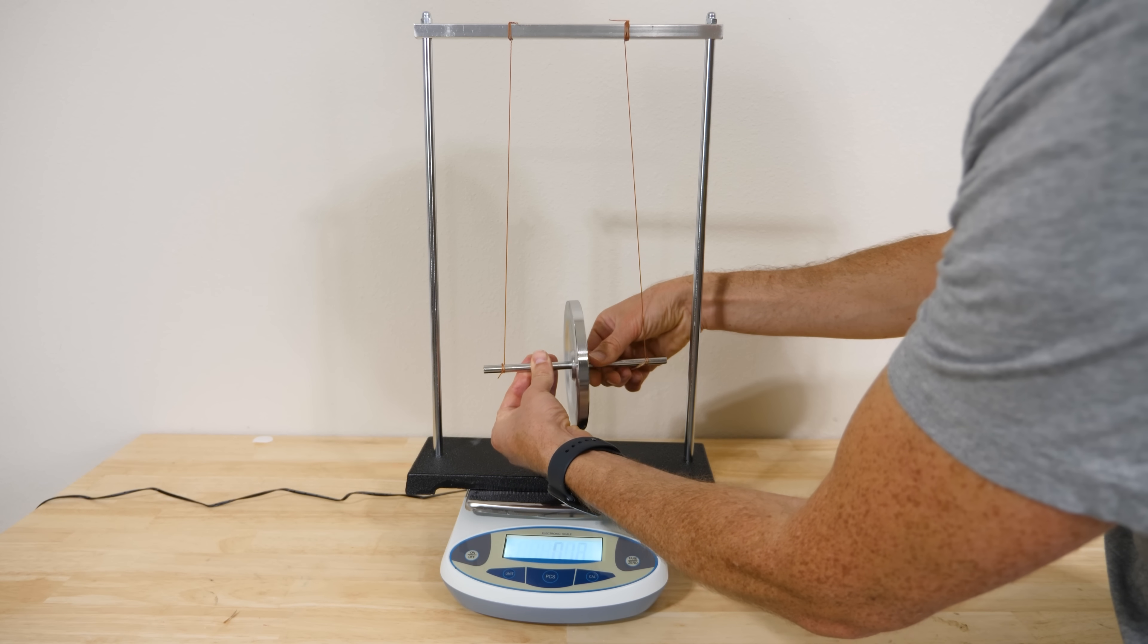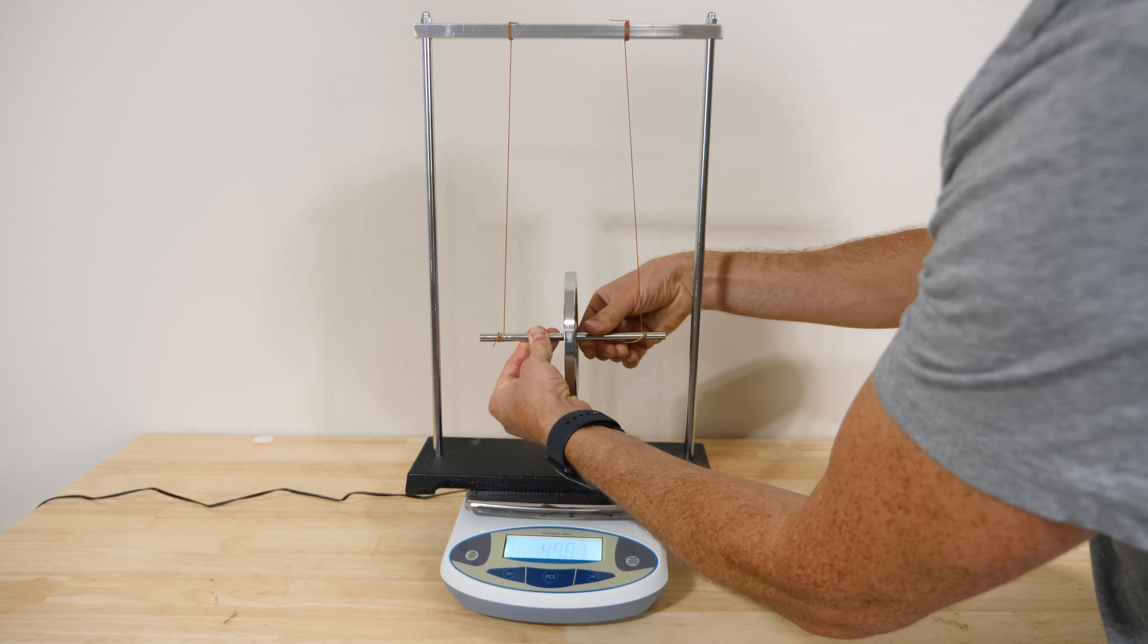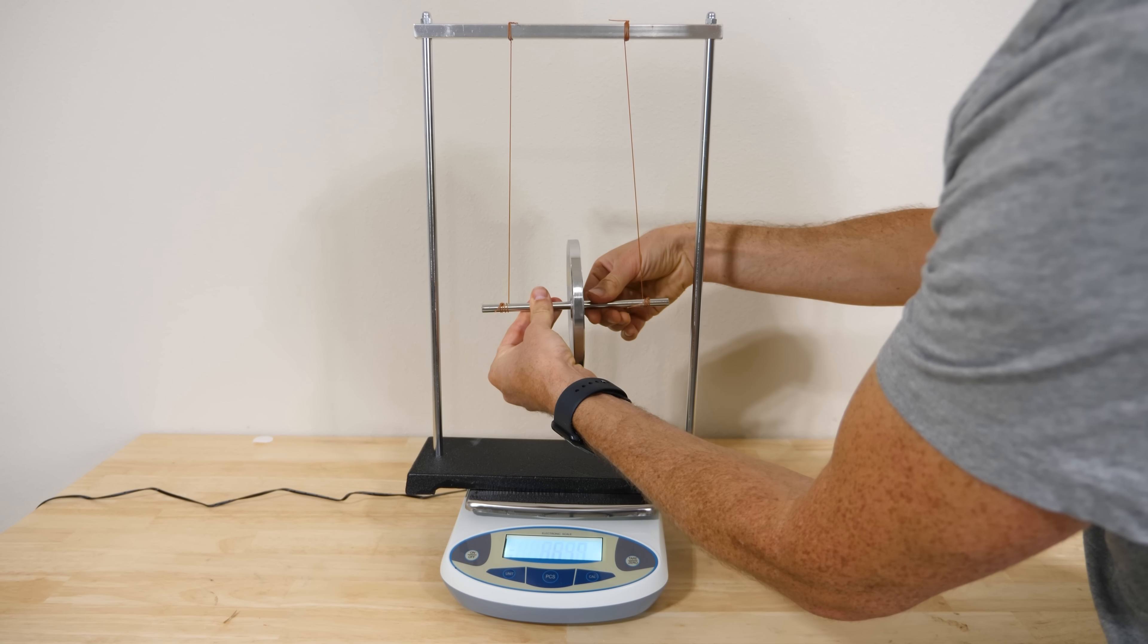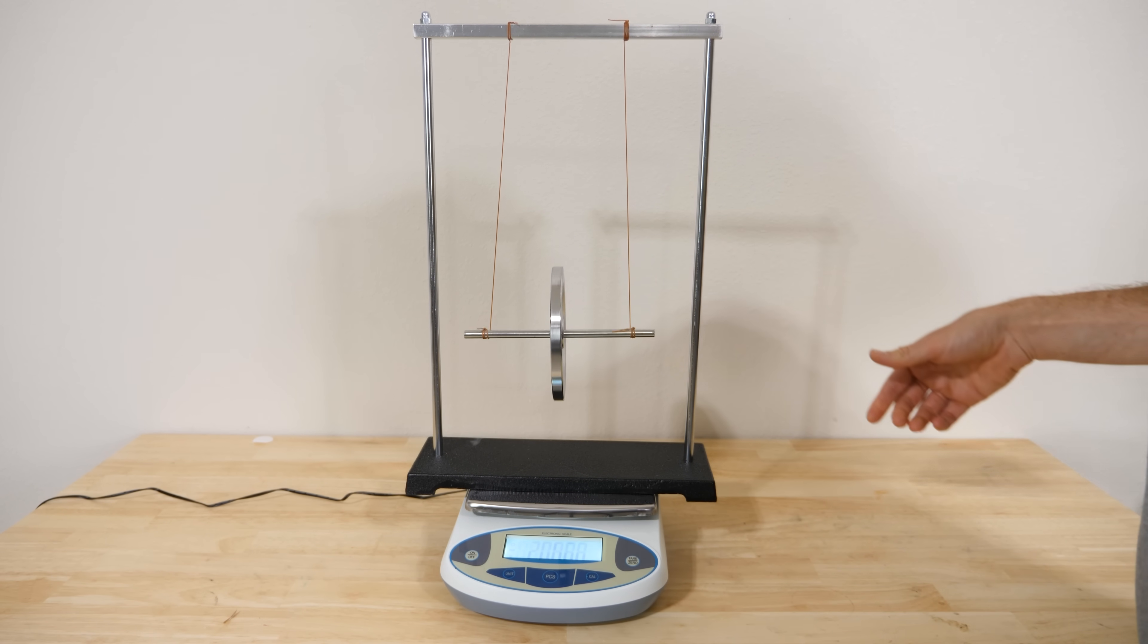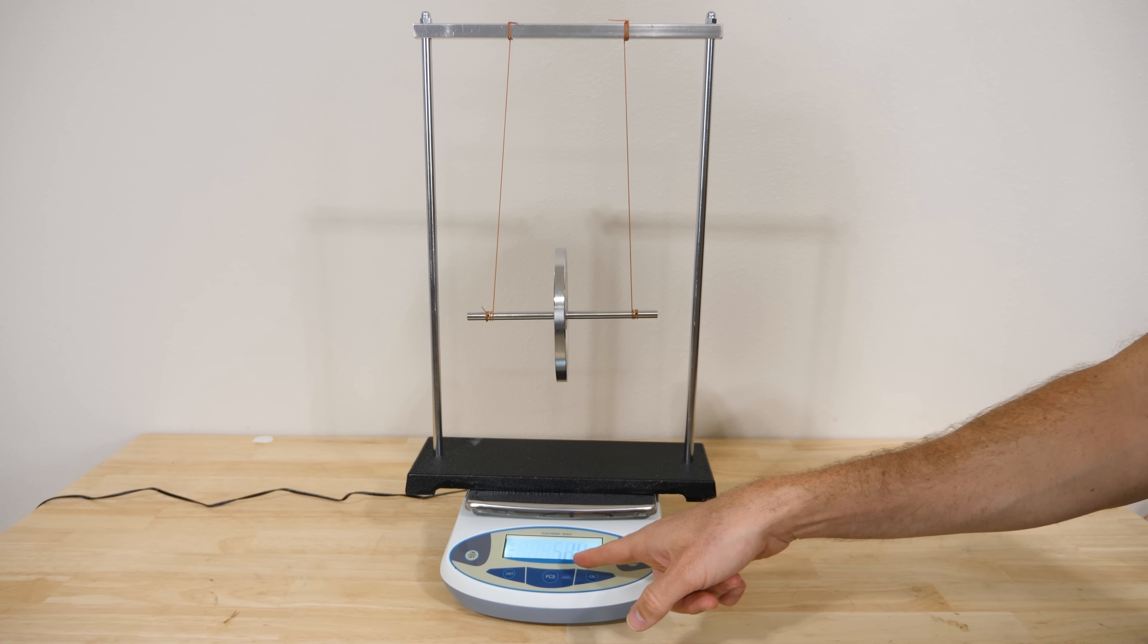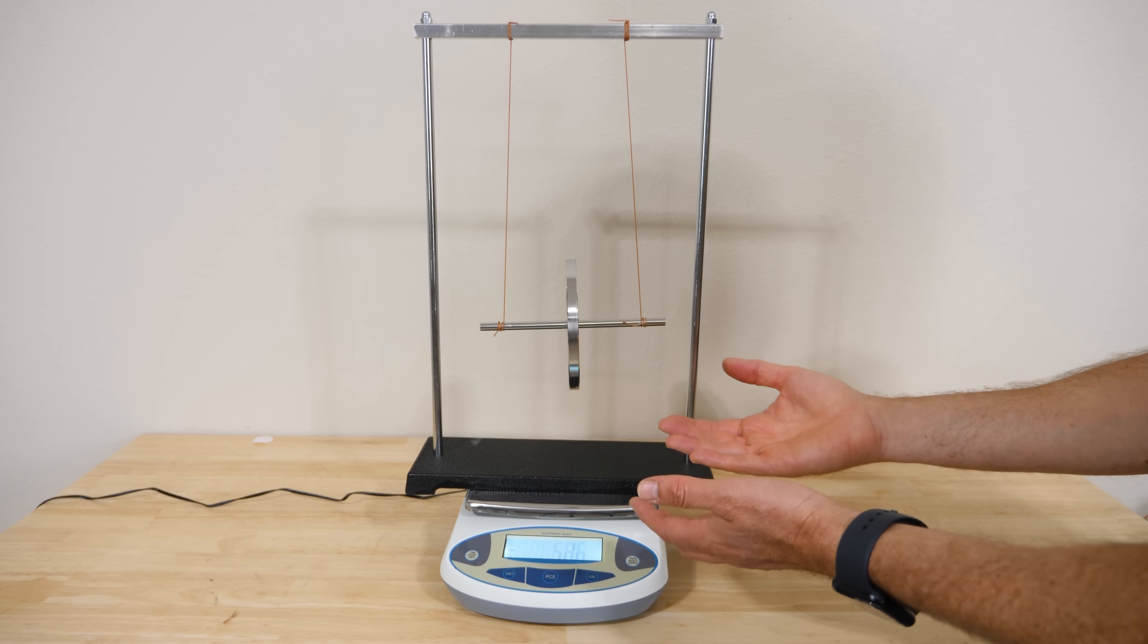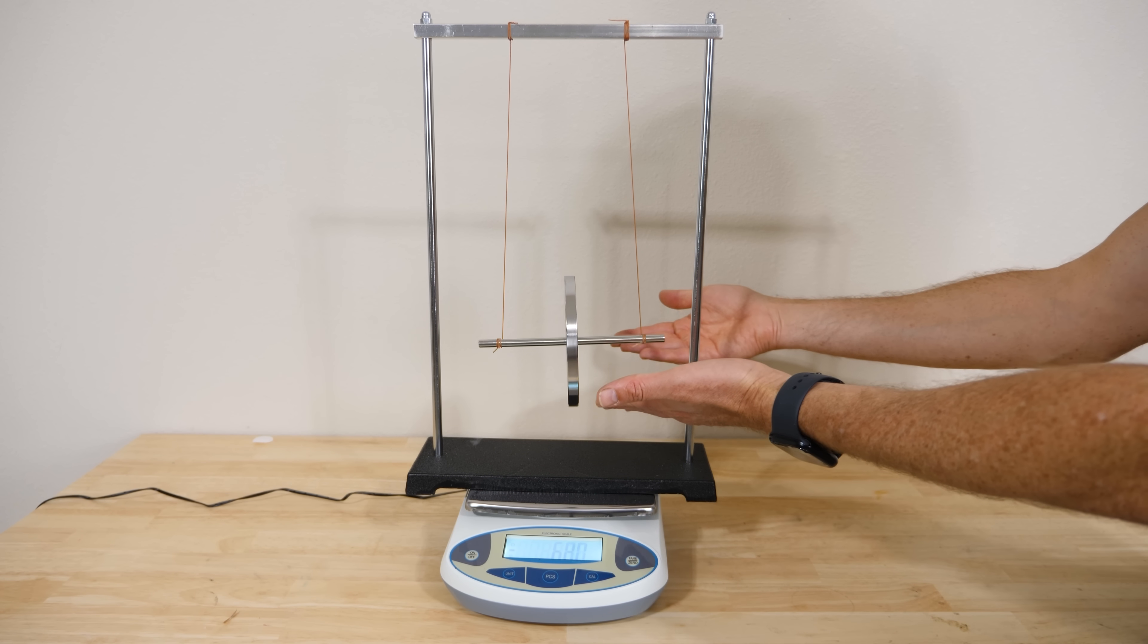But as soon as I get it spinning, even if I don't do it very high, just start it around this high, as soon as it starts spinning it drops to this negative six grams again. Isn't that crazy? We're registering less weight as long as this wheel is spinning.